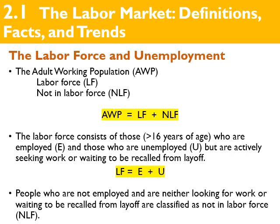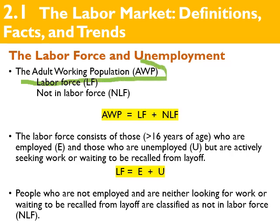Now we're talking about the labor force and unemployment. I'll divide the population into two categories: people below 16 years — children and teenagers — and those above 16. When talking about the labor market, I focus on the adult working population (AWP), those who are more than 16 years old.